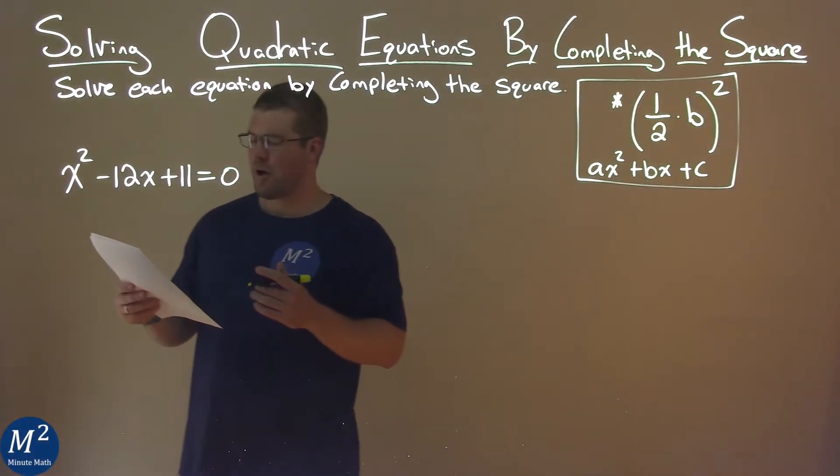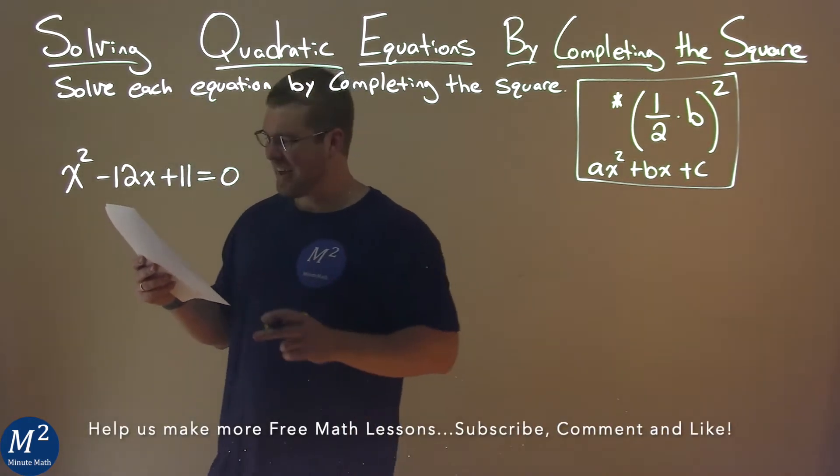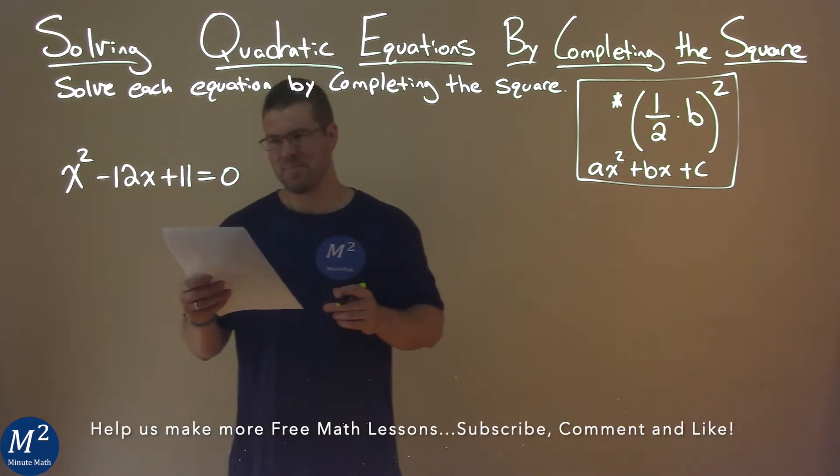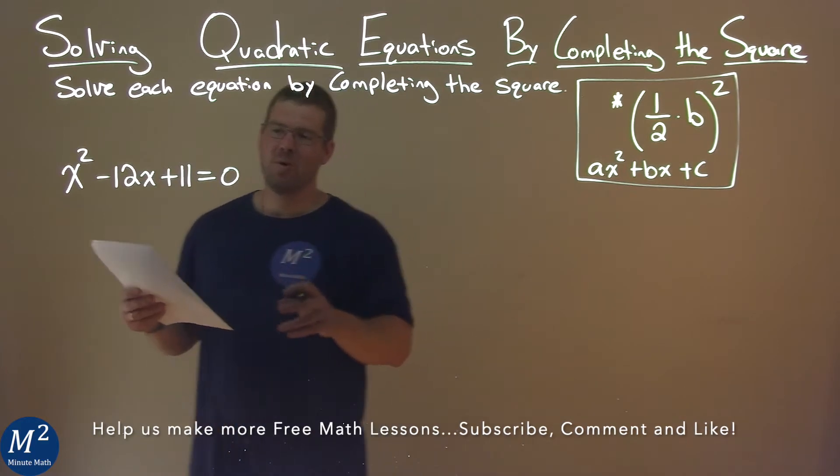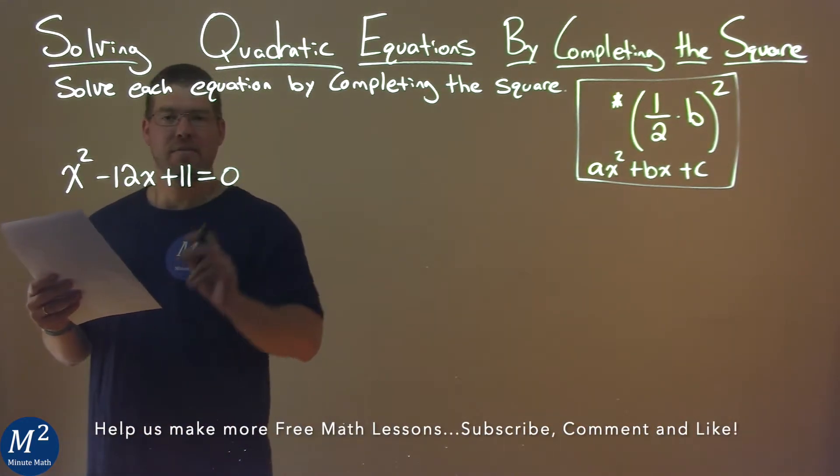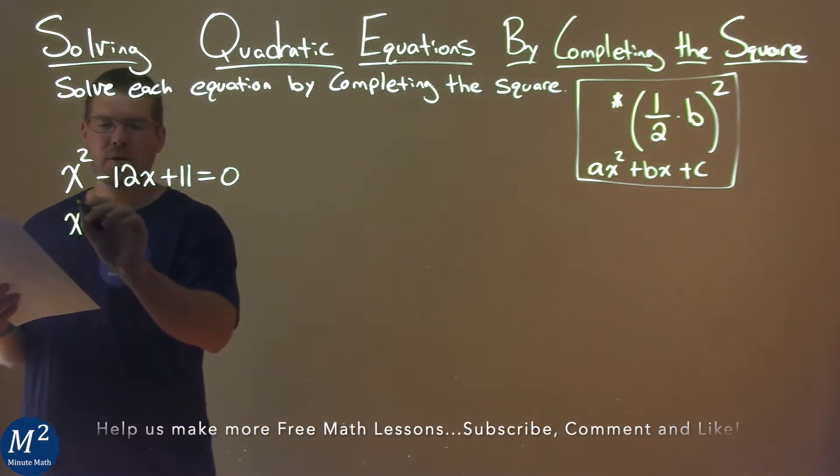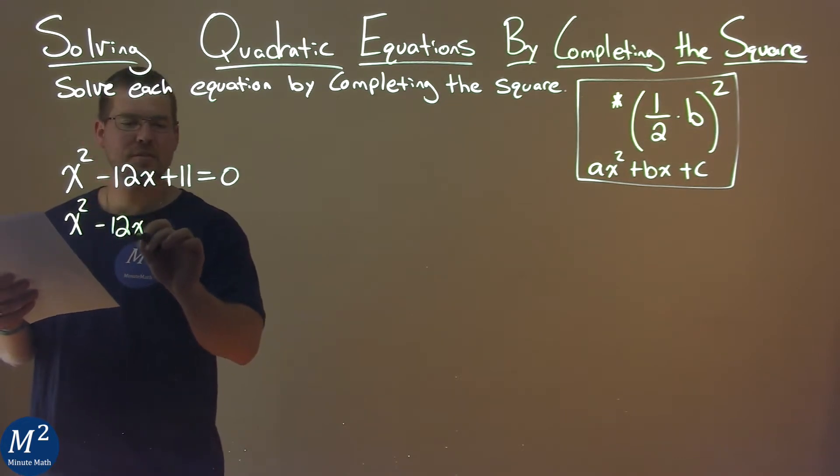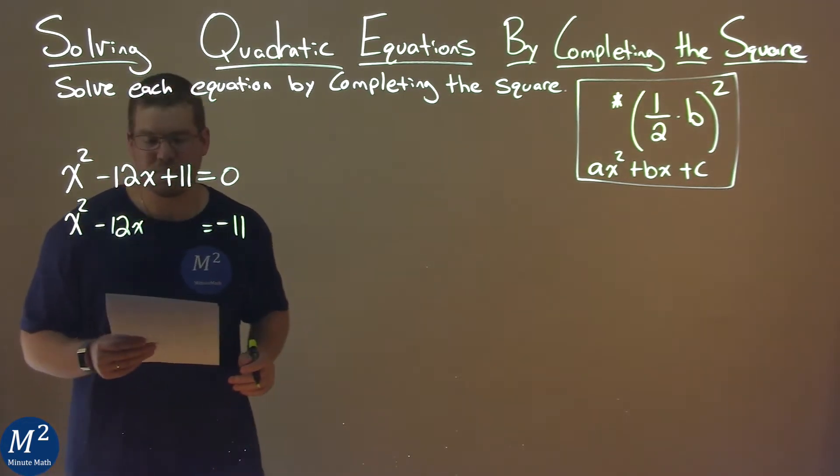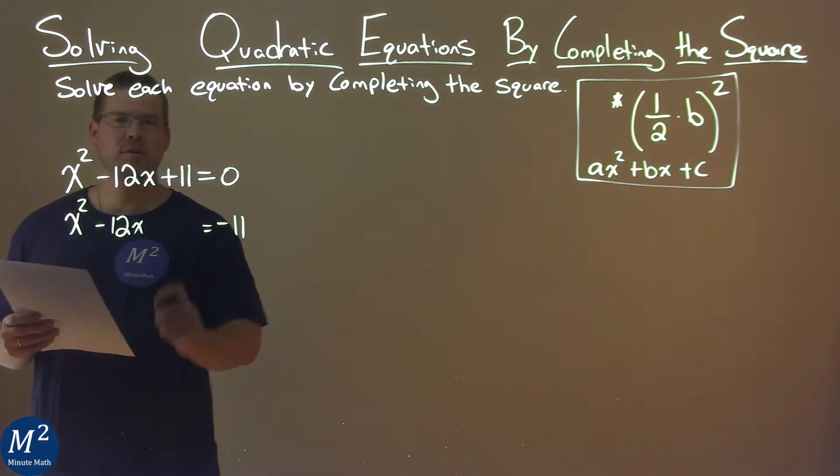We're given this problem right here: x squared minus 12x plus 11 equals zero, and we need to solve it. Well, I want to first subtract 11 from both sides. I have x squared now minus 12x equals negative 11, and notice I left a space here, and you'll see why in a minute.